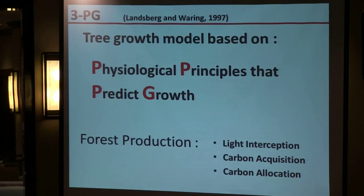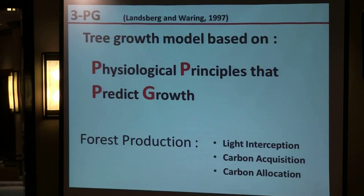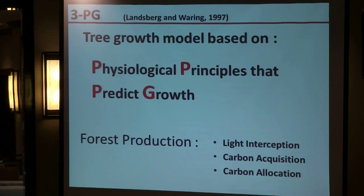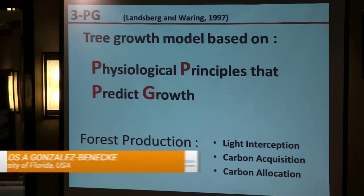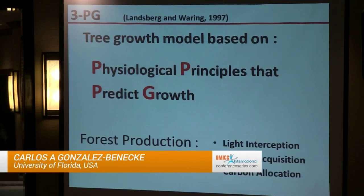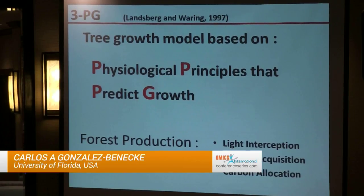The model is very simple to use. You only need monthly mean minimum temperature, mean maximum temperature, radiation, and rainfall. If you also have vapor pressure deficit and number of rainy days, it's better, but the model can calculate those. The model is based on three main principles: light interception, carbon acquisition, and carbon allocation.